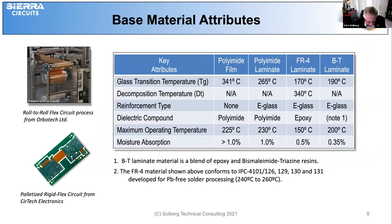The attributes that should be considered are glass transition temperature, decomposition temperature, reinforcement type, dielectric compound, maximum operating temperatures, and moisture absorption. By the way, the BT laminate material is a blend of epoxy and bismaleimide triazine resins.